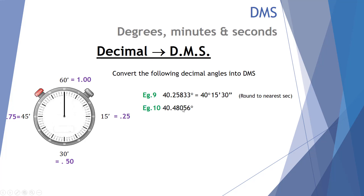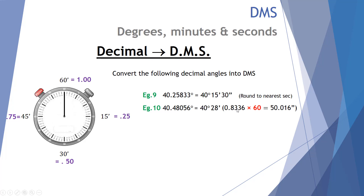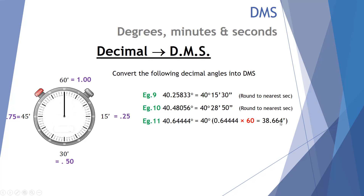Another example: 40.48056 degrees. That's 40 degrees with a leftover 0.48056, times 60 gives 28.8336 minutes. That's 28 minutes with a leftover 0.8336; times that by 60 gives approximately 50 seconds. Next: 40.64444 degrees. That gives 40 degrees with 0.64444 times 60 equalling 38.664 minutes. That 0.664 multiplied by 60 gives nearly 40 seconds. So that's equivalent to 40 degrees, 38 minutes and 40 seconds.